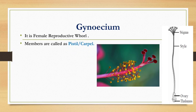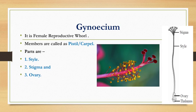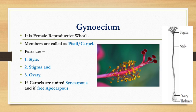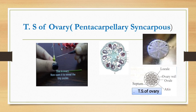Let us discuss about gynoecium. It is the female reproductive whorl. Members are called pistils or carpels. The parts of pistils and carpels are style, stigma, and ovary, as you can see in the picture. If the carpels are many in number and they are united, the condition is called syncarpous. If carpels are many in number and they are free, they are called apocarpous. In hibiscus, you can see there are five pistils or carpels fused to form a single ovary — so it is a syncarpous gynoecium. It is pentacarpellary because five carpels are fused.